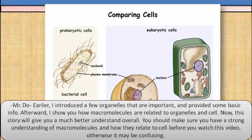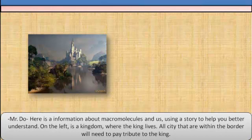Hopefully this will help you clear up all the basic understanding of how macromolecules, cells, and organelles are all interrelated. Earlier, I introduced a few organelles that are important and provided some basic info. Afterward, I showed you how macromolecules are related to organelles and cells. Now, this story will give you a much better understanding overall. You should make sure you have a strong understanding of macromolecules and how they relate to cells before you watch this video, otherwise it may be confusing. Here is information about macromolecules and us, using a story to help you better understand.